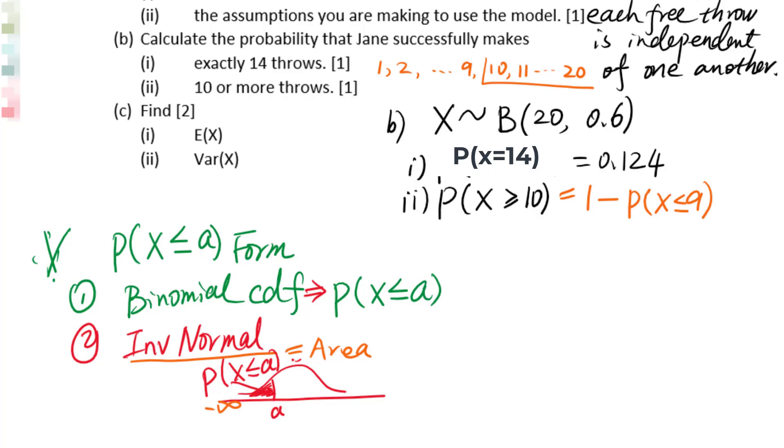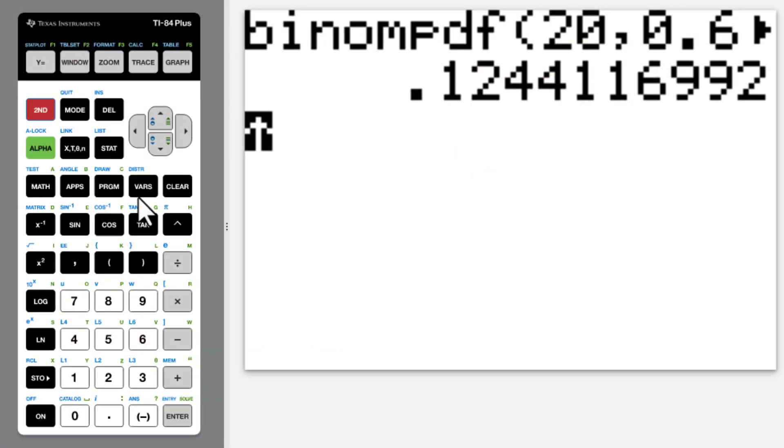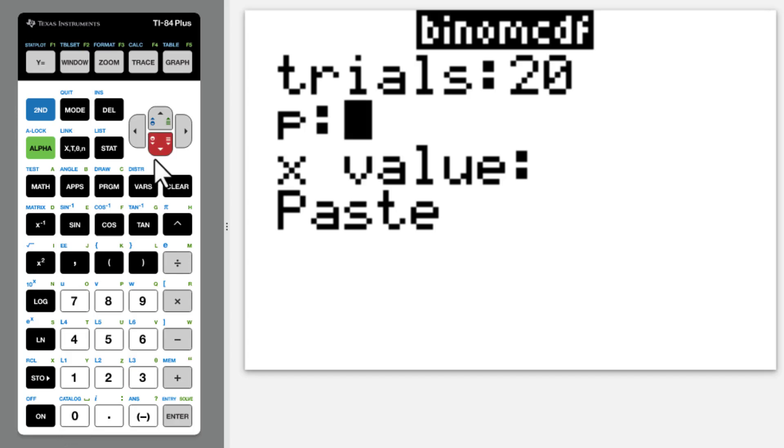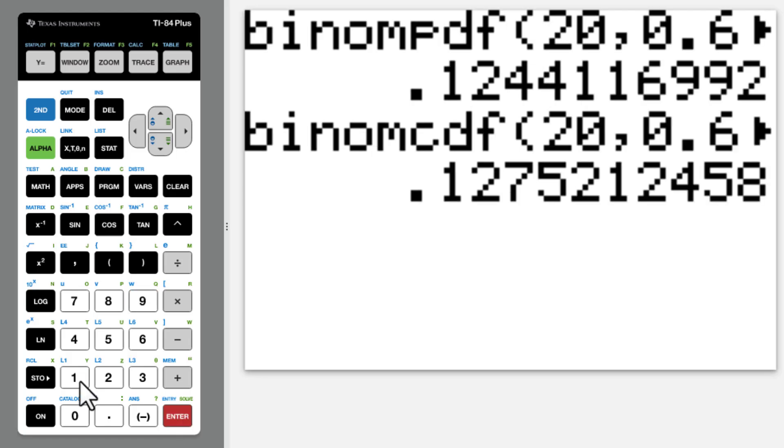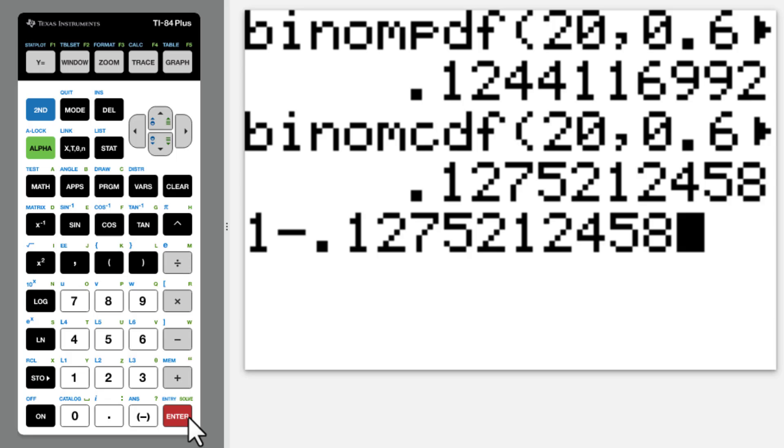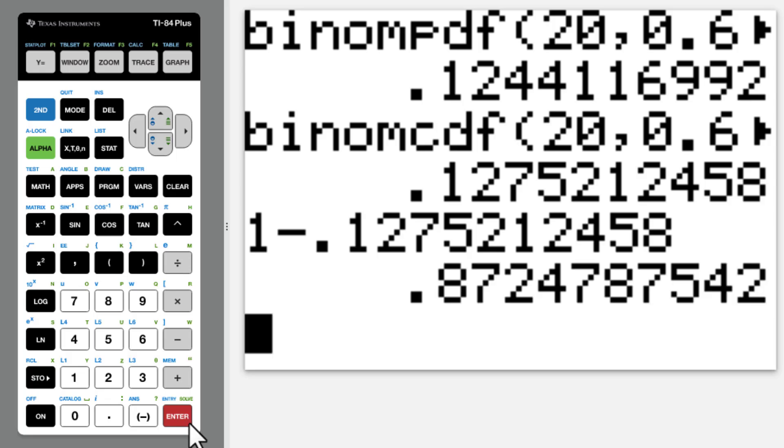Let's go to calculator. 2nd variable, 2nd variable, binomial CDF. Trials 20, probability is 0.6, X value 9. You have to use 1 minus probability of X less than or equal to 9. 0.872.